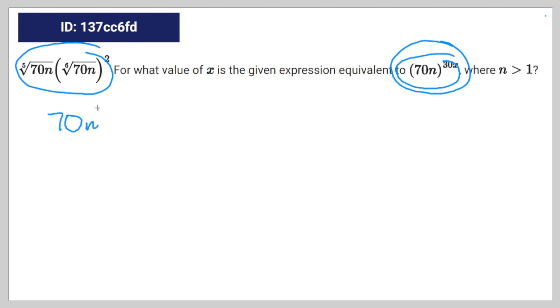70n to the power of 1 fifths times 70n to the power of 1 sixths to the power of 2 is equal to 70n to the power of 30x.